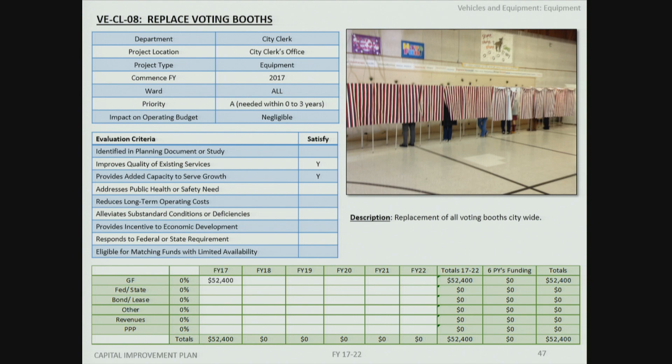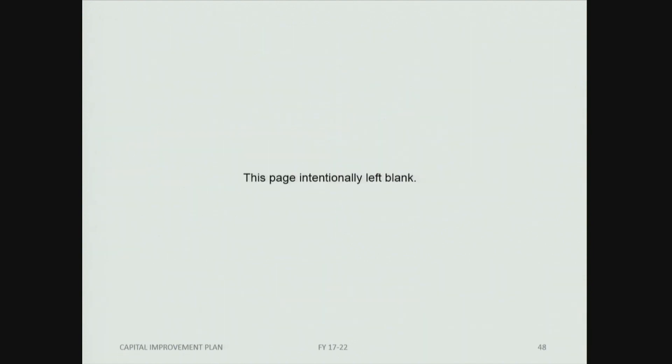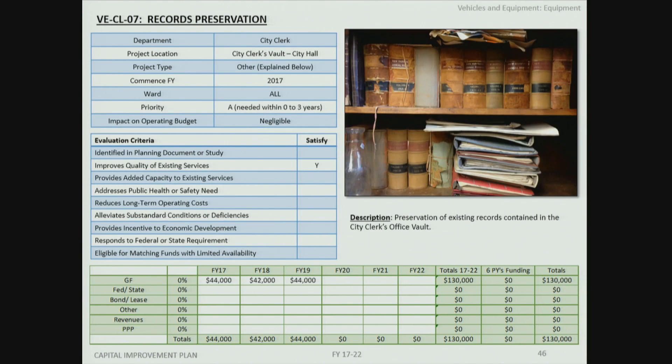The second project is records preservation: the first of a three-phase project for existing records contained in the office vault. The preservation process includes deacidification, mending and reinforcement of paper, re-sewing, rebinding, and archival-grade polyester encapsulation as appropriate.